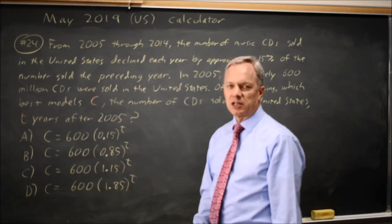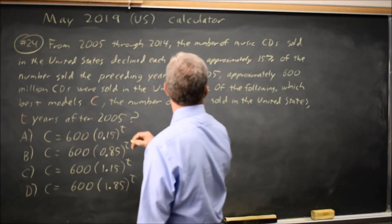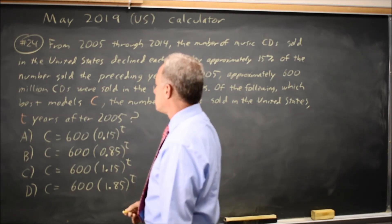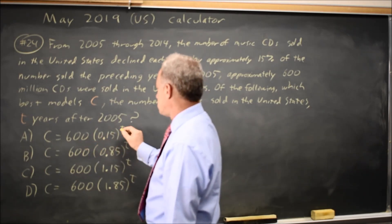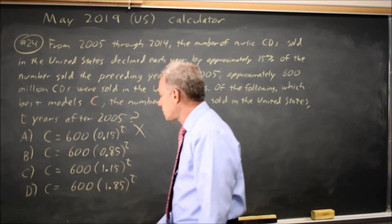Rather than a 15% decline, we decline by 85%. We decline from 600 million to 90 million. So choice A is wrong. That's too big a decline.